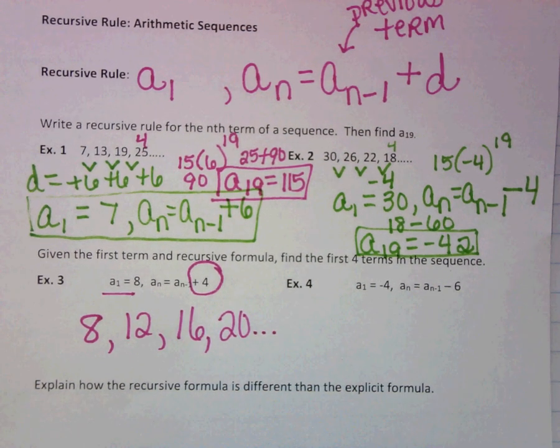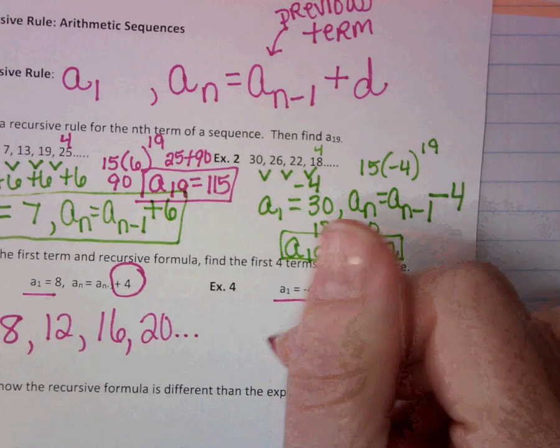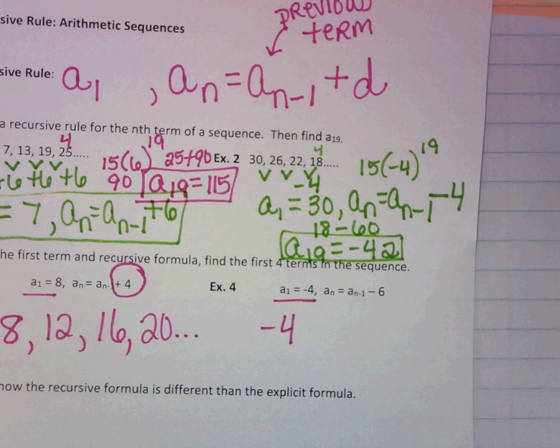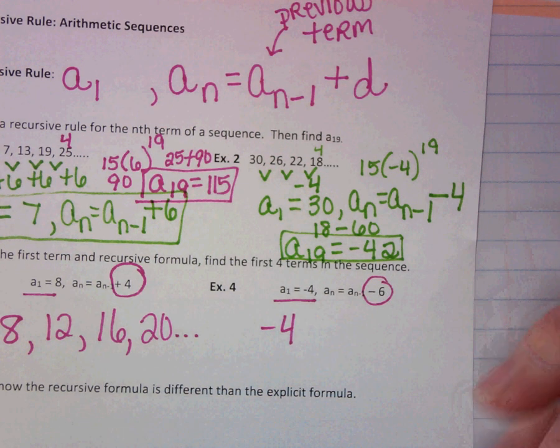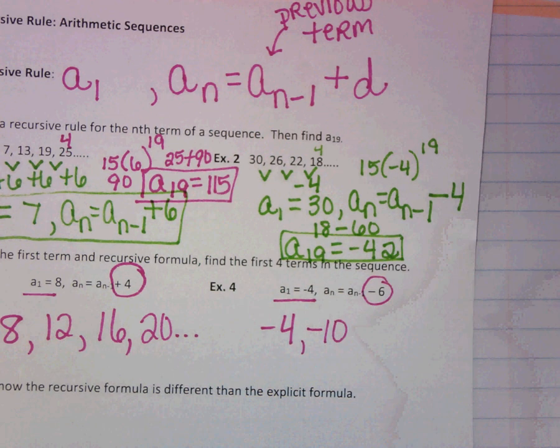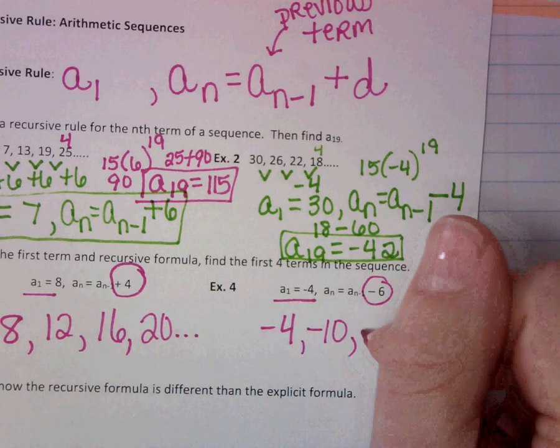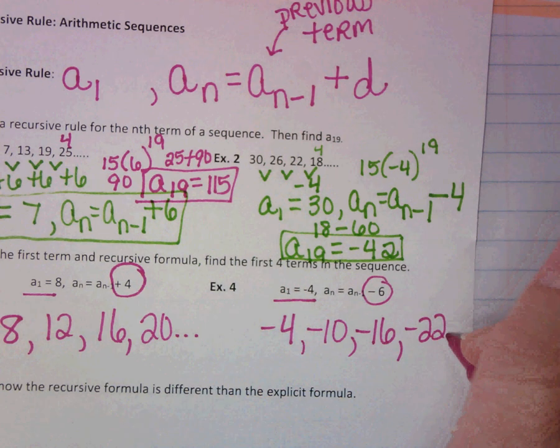Super, a lot easier, right? Look at the next one. First term is negative 4. The common difference this time is negative 6, so now I'm subtracting 6. Negative 4 minus 6 is negative 10. Minus 6 is negative 16. Minus 6 is negative 22.